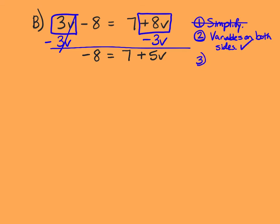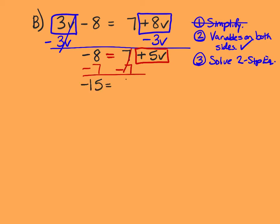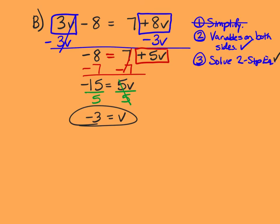We've only got the variable on one side now. The third step is just to solve — in this case it is a two-step equation. I'm going to box in my v term, look at the equal sign, and notice there's a 7 on the same side. So I get rid of positive 7 by subtracting 7 from both sides, giving negative 15 equals positive 5v. Then dividing both sides by 5, I get negative 3 equals v. We first simplified, then got rid of one v term, and solved the two-step equation.